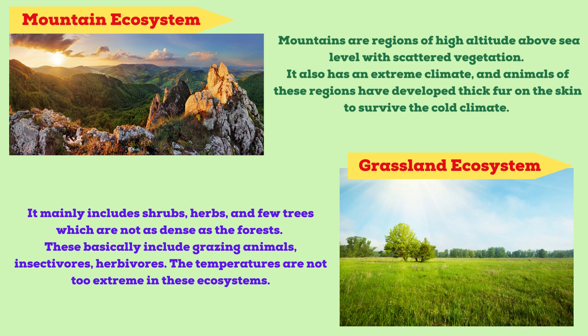Mountain ecosystems are regions of high altitude above sea level with scattered vegetation and extreme climate. Animals in these regions have developed thick fur on their skin to survive the cold climate. Grassland ecosystems mainly include shrubs, herbs and few trees, which are not as dense as forests. They include grazing animals, insectivores and herbivores, with temperatures that are not too extreme.